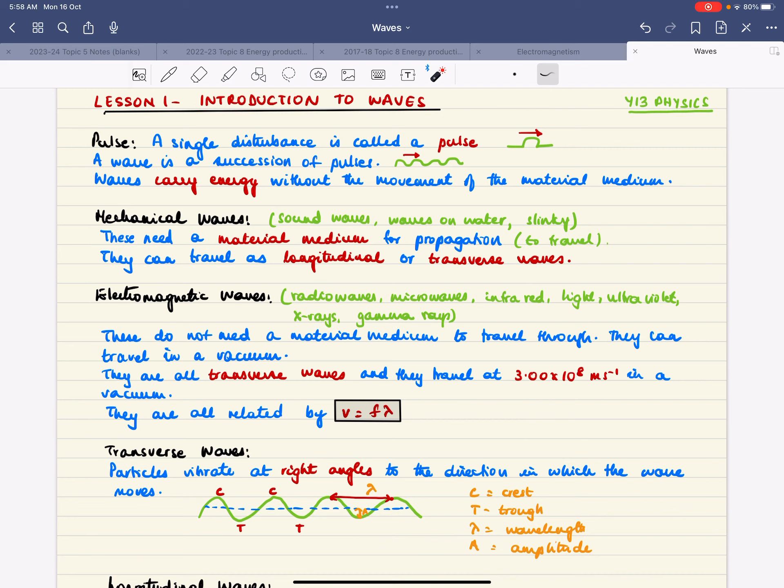Mechanical waves are sound waves, waves in water, waves on a slinky. For a mechanical wave, they need a material medium in order to travel. Another word for travel is propagation.